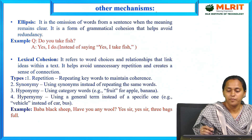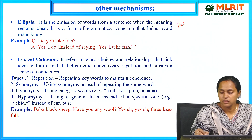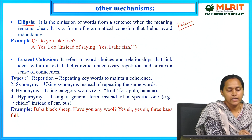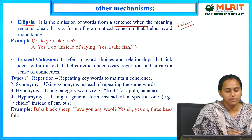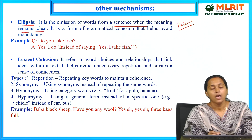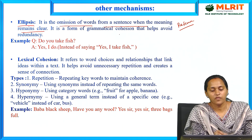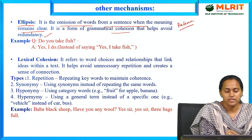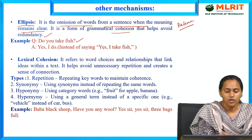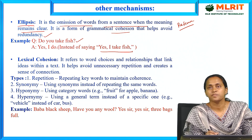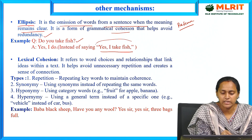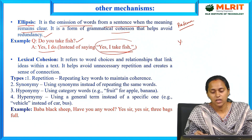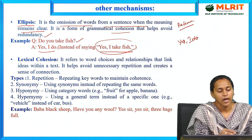Other cohesion mechanisms include ellipsis. Ellipsis is the omission of words from a sentence when the meaning remains clear. It is a form of grammatical cohesion that helps avoid redundancy. Example: 'Do you take fish? Yes, I do.' Instead of saying 'Yes, I take the fish,' we use 'Yes, I do,' thereby reducing redundancy through ellipsis.